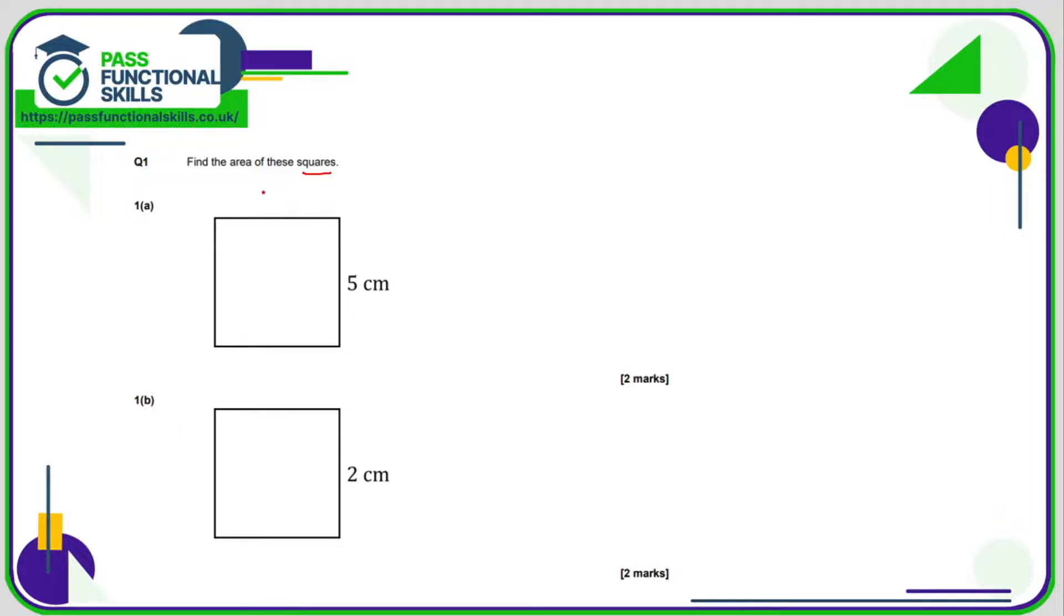Question 1 is non-calculator, so we're finding the area of a square. Squares have side lengths that are the same, so this side length is going to be 5 as well. So it's 5 times 5, which is 25, and the unit for area will be centimetres squared. Here it's going to be 2 times 2, which is 4 centimetres squared, or 4 squared centimetres.